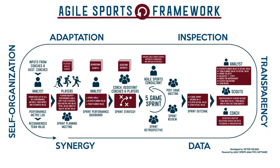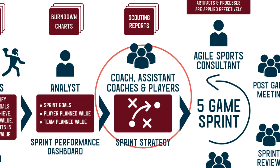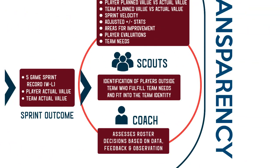There are key roles in Agile Sports. The lead analyst, in charge of analytics and reporting performance. The coach and players, responsible for translating these analytics into performance on the court. The assistant coaches, responsible for game time statistics and helping players improve skills to create value. The scouts, responsible for preparing scouting reports and identifying players outside of the organization who fit the team identity.